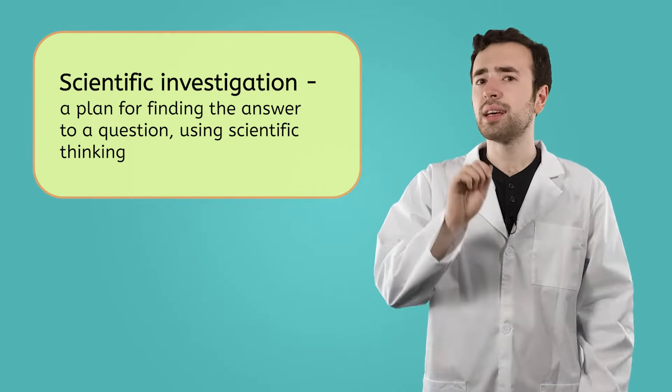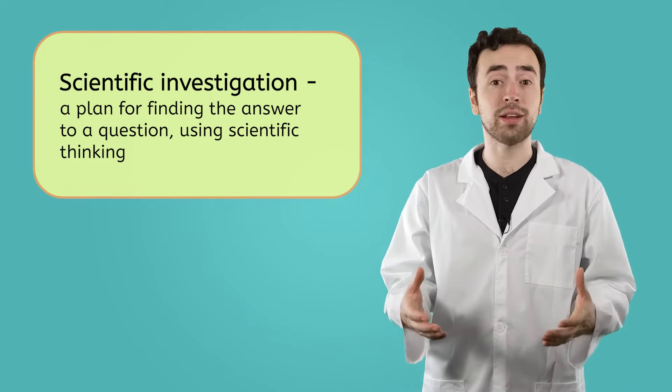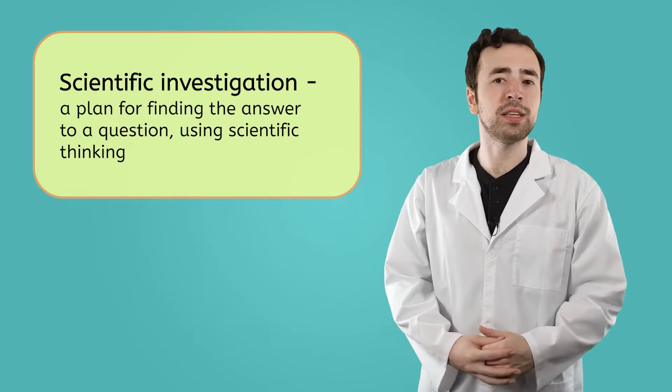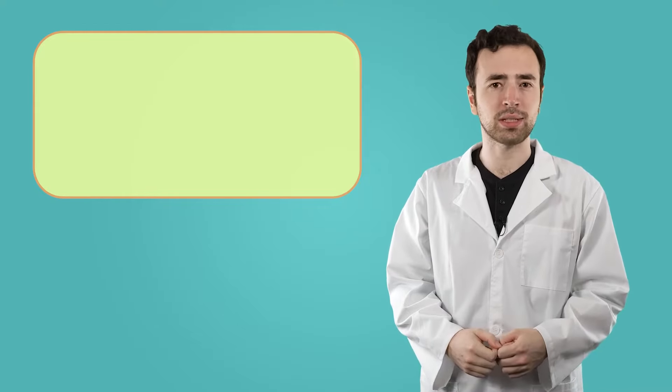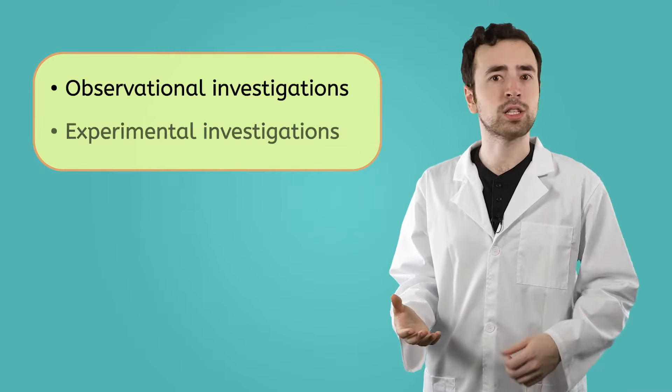We know that scientific thinking helps scientists ask and answer questions, but how does answering these questions really work? I could say, hey, here's my garden — go in and use your five senses to answer all of my questions about daisies. But you'd probably be a little unsure of where to start, or where to find the daisies even. There are plenty of different methods that scientists use to answer their questions. We call these scientific investigations, or a plan for finding an answer to a question using scientific thinking. Not all questions can be answered in the same way, so we're going to be talking about two different types of scientific investigations: observational investigations and experimental investigations.